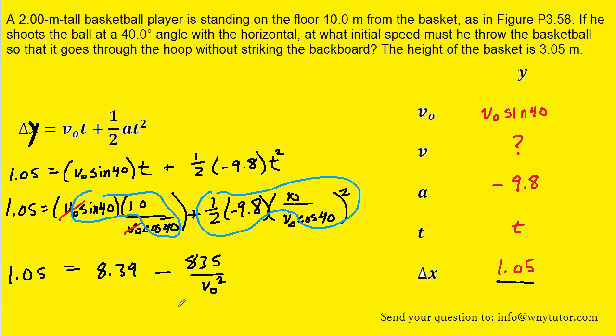The rest is relatively basic algebra. Why don't we subtract 8.39 from both sides? We could then put this result over 1 and cross multiply. And when you finish off solving for v naught, you should get 10.7, and the unit of velocity would be meters per second.